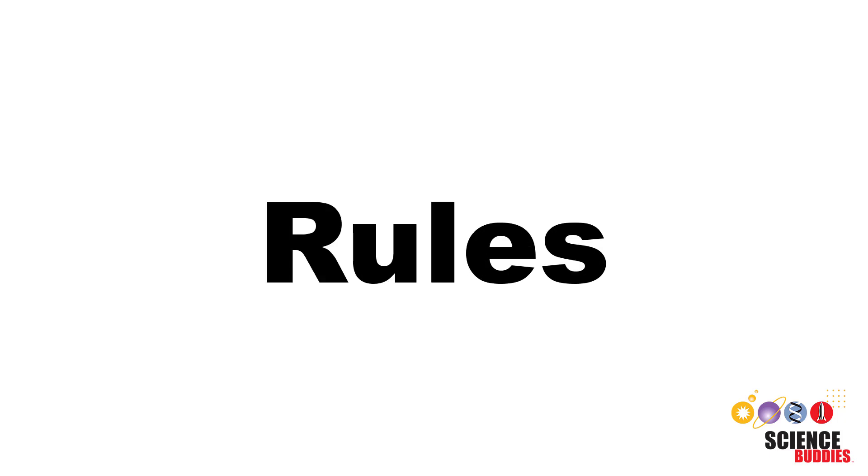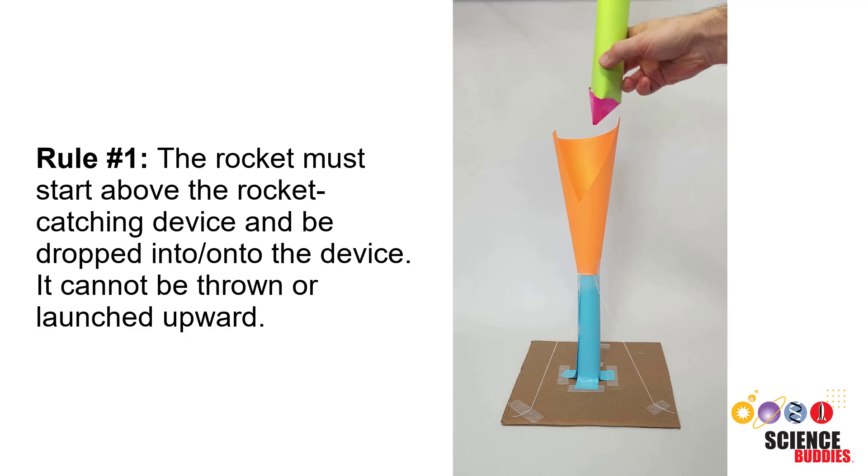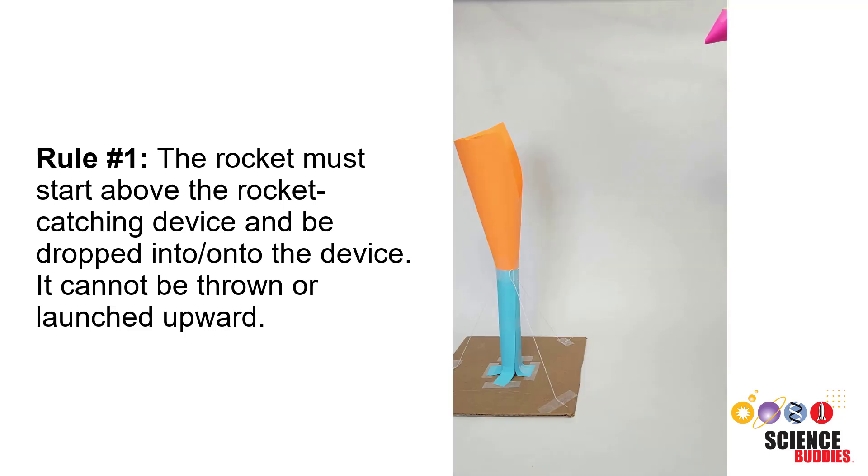Now for the rules. Rule number one: The rocket must start above the rocket catching device and be dropped into or onto the device. It cannot be thrown or launched upward.